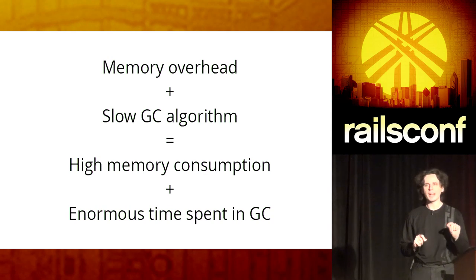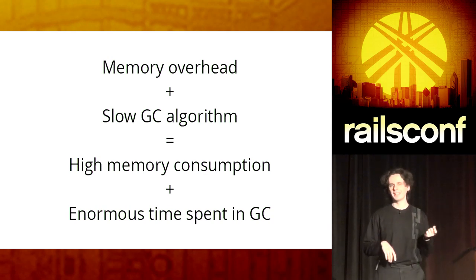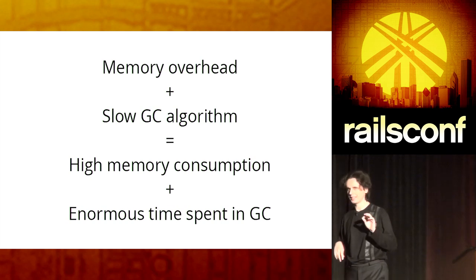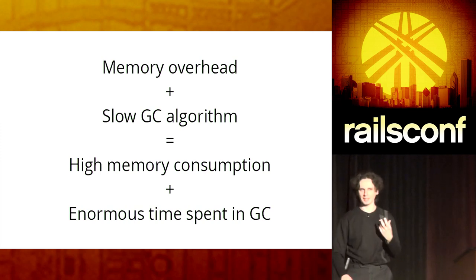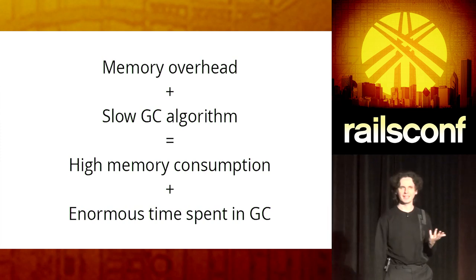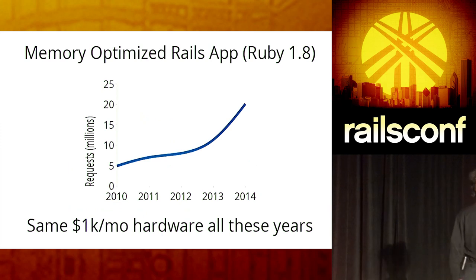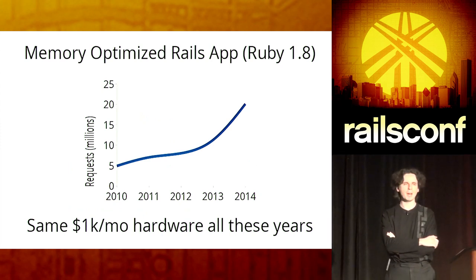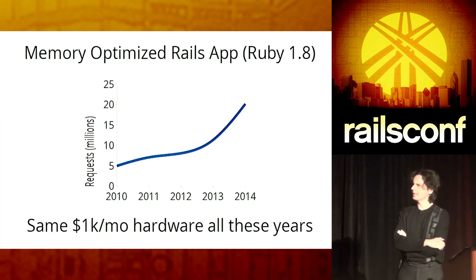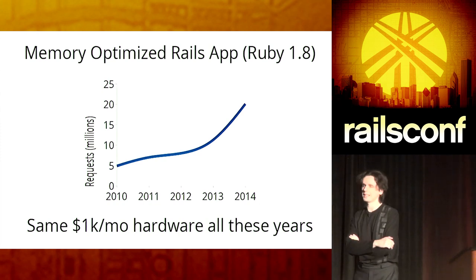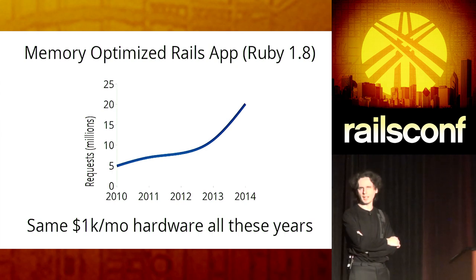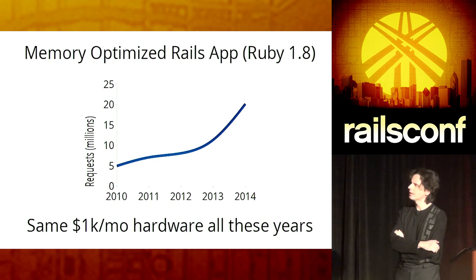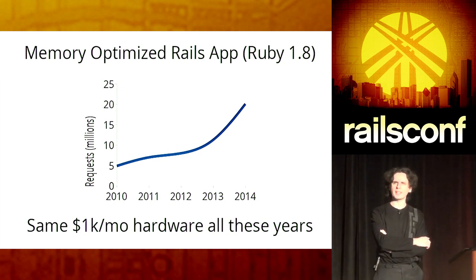And that is why Ruby 2.1 is important. It does not optimize your memory, but it improves the performance of the garbage collector itself, and the garbage collector gets about 40 percent faster. Here are some examples to prove that memory optimization is important. This is the good old application that is still running Ruby 1.8, and it's been there for five years, and the number of requests it's serving is increasing every year, but it still runs on the same hardware that we bought back in 2010.